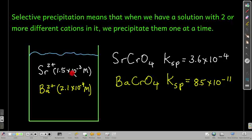Now let's look at this. Suppose we have a beaker, a solution, where we have both strontium and barium ions, and let's say these are the concentrations of the ions in there: 1.5 times 10 to the minus 3 molar for strontium, and 2.1 times 10 to the minus 4 molar for barium. And we want to precipitate them out one at a time to separate them.